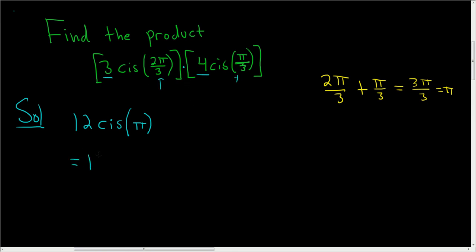So this is 12. Cis stands for cosine i sine, so this is parentheses cosine of π plus i sine of π.